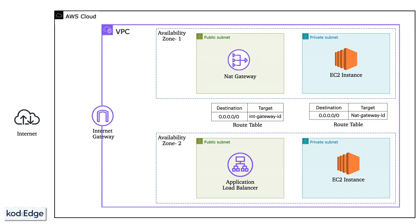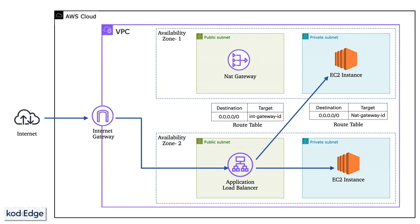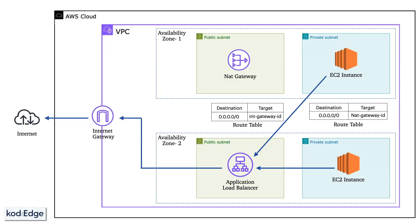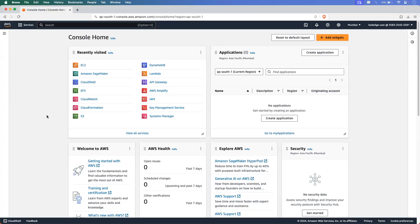So if a user wants to access the application deployed in the EC2 instance, the user will call the URL of the application load balancer. That request will go first to the internet gateway, which will forward it to the application load balancer, and the application load balancer will forward that request to the EC2 instance in the private subnet. The EC2 instance will forward the response back the same way to the application load balancer, which will forward it to the internet gateway, and the internet gateway will forward it to the user.